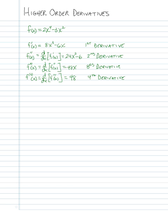We can find the derivative of this and call that the fifth derivative, noted as f with a little parentheses five. That's the derivative of the fourth derivative. Since the fourth derivative is a constant, that derivative is zero. From here on out each derivative will be zero because we're just taking the derivative of zero each time, so there's not much usefulness in continuing.